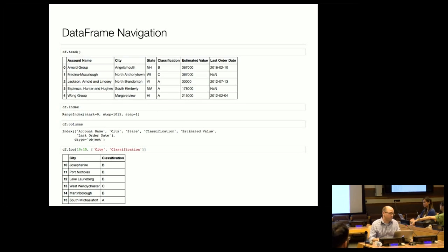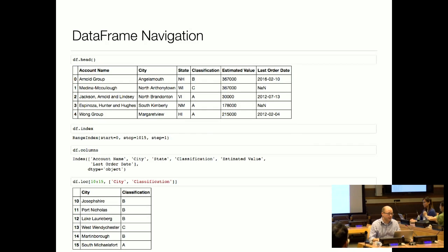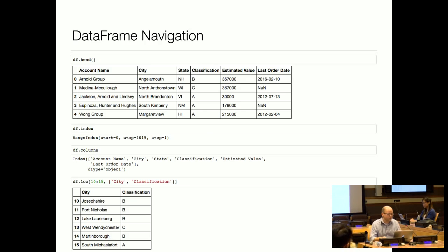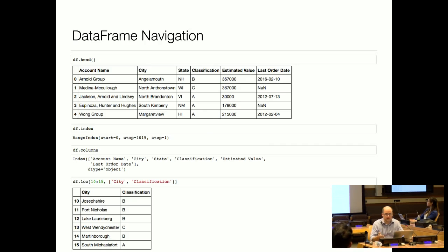Getting started with the basics, there are a number of different ways that Pandas allows you to get data into a DataFrame, which is the fundamental object. There is a from_csv method which you can use to bring in a flat file — a common way to get data into Pandas. I have created some fake data here and put it into this variable DF. You can see in our very first item here we've used the head method, which is just going to show us the first five rows of the DataFrame.